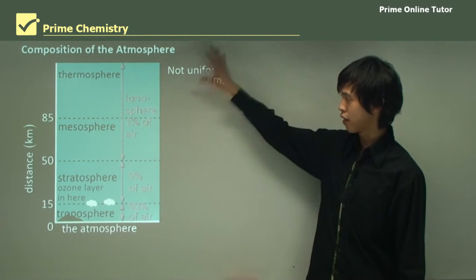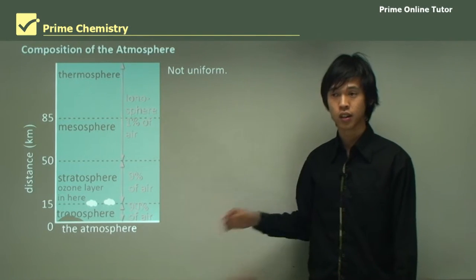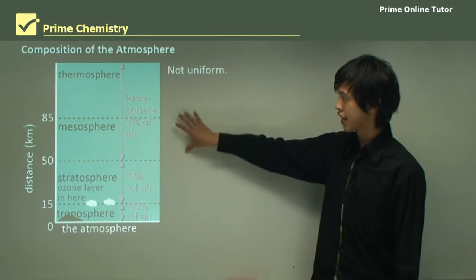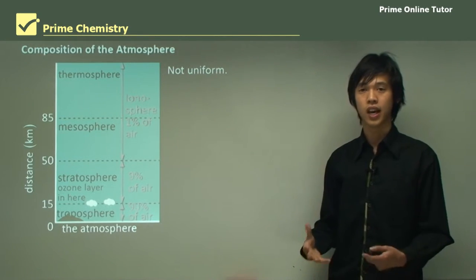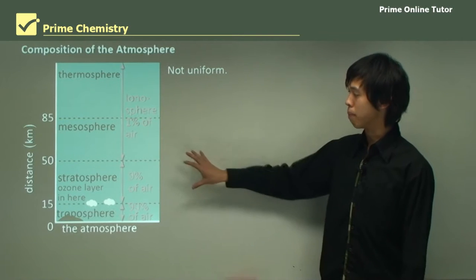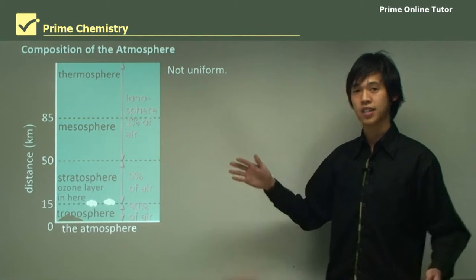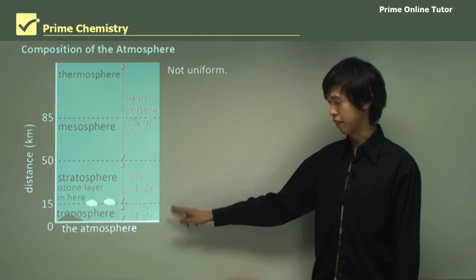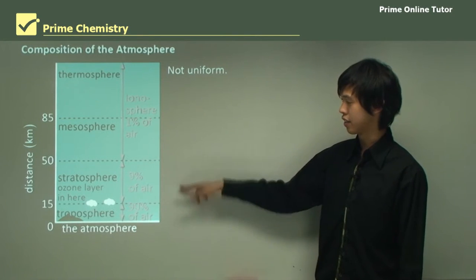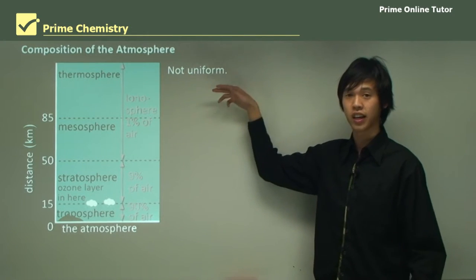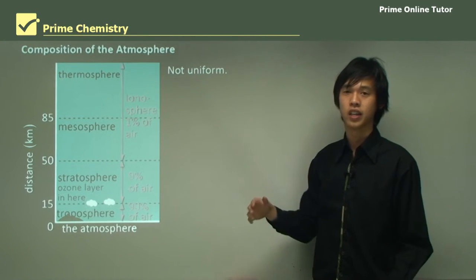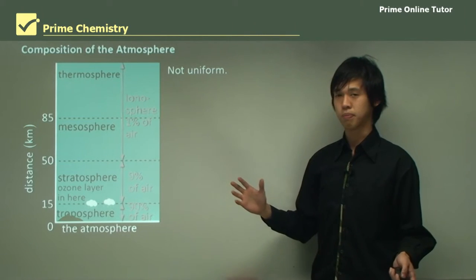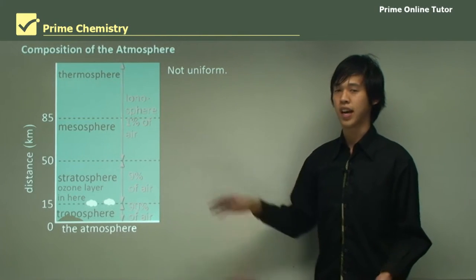As we go further and further away from the Earth's surface we have less and less particles in the air but more size in terms of thickness. So from the bottom we have a very thin layer to the very top where we have a very thick layer but very rarefied or very dispersed gas.